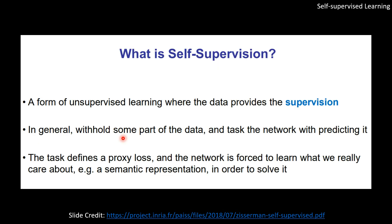So what is self-supervision? It's a form of unsupervised learning where the data provides the supervision. Instead of creating any external supervisory signals in the form of labels, we take some information from the data itself as supervision. In general, we withhold some part of the data and task the network with predicting it. We define a proxy loss, and while solving that proxy loss the model learns the representation — for example, semantic representation in the case of images.